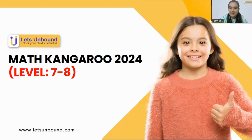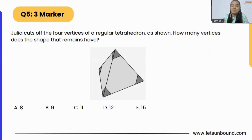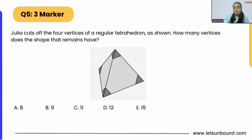Let's get started with today's video. The question is pretty interesting: Julia cuts off the four vertices of a regular tetrahedron as shown. How many vertices does the shape that remains have? So firstly, we have to cut all four vertices of this tetrahedron and then count the number of vertices remaining.